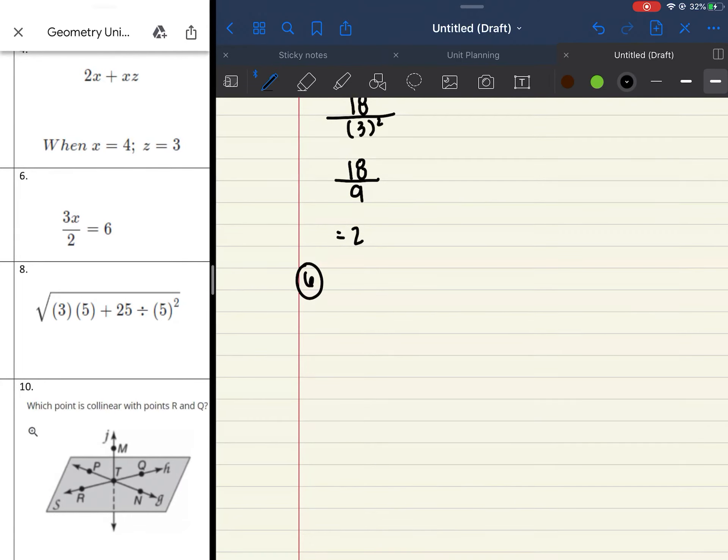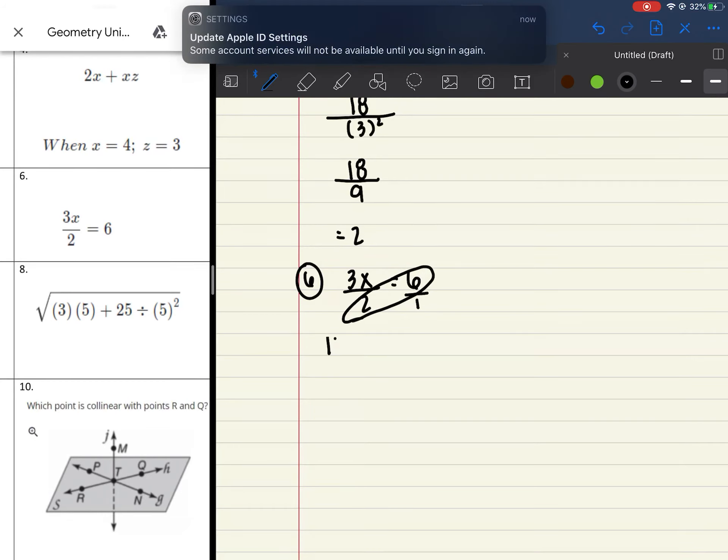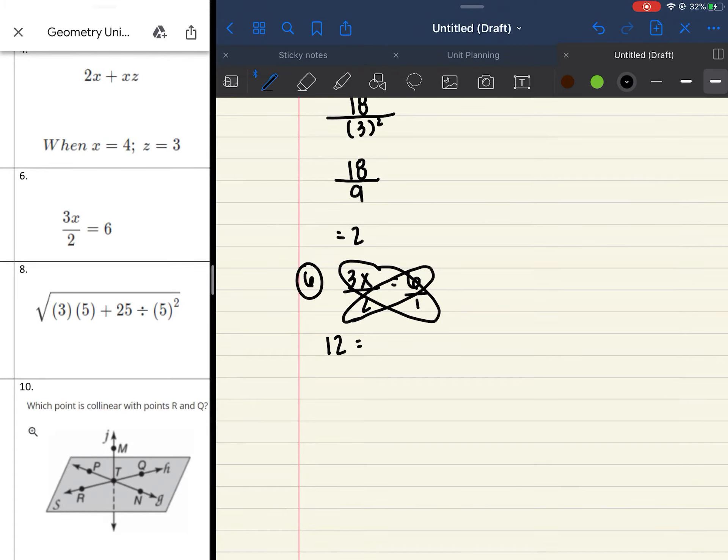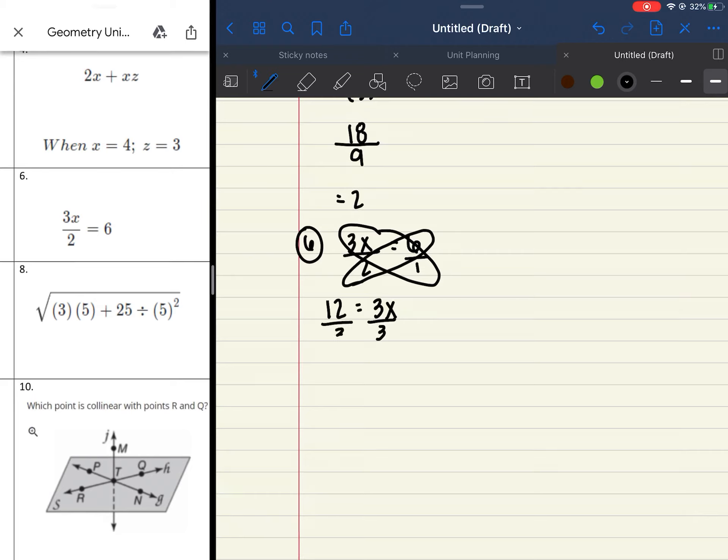Number 6. So I have 3x over 2 equals 6. Remember, when you have this one, you want to put 6 over 1, and we're going to cross-multiply. 2 times 6 gives me 12, which is equal to 3 times 1, or 3x times 1, and that gives me 3x. And then your last step to solve for x is divide by 3. So you should end up with x equals 12 divided by 3 gives you 4.